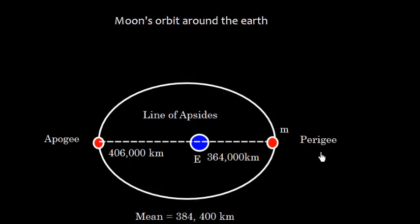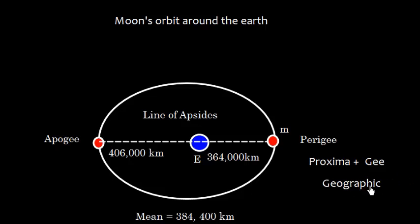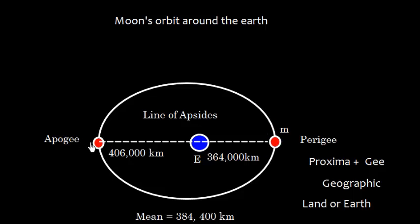Sometimes the Moon is closer to the Earth — this position is called perigee. 'Peri' means proximate, and 'geo' is a suffix meaning land or Earth. When at perigee, the Moon's distance is about 364,000 kilometers. When the Moon has traveled to its farthest point, that is called apogee — 'apo' meaning away from Earth — with a distance of about 406,000 kilometers.